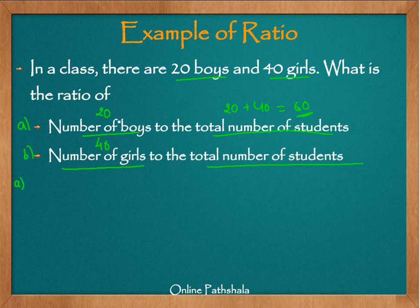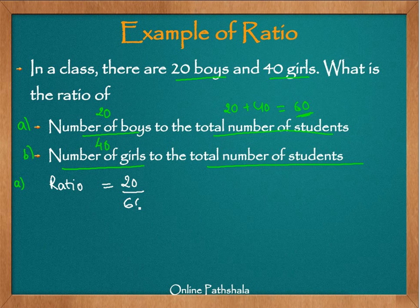The first quantity — the number of boys — becomes our numerator. So the ratio is equal to the number of boys, which is 20, over the total number of students, which is 60. So we have number of boys, 20, to number of students, 60. Now, 20 by 60 is the ratio.